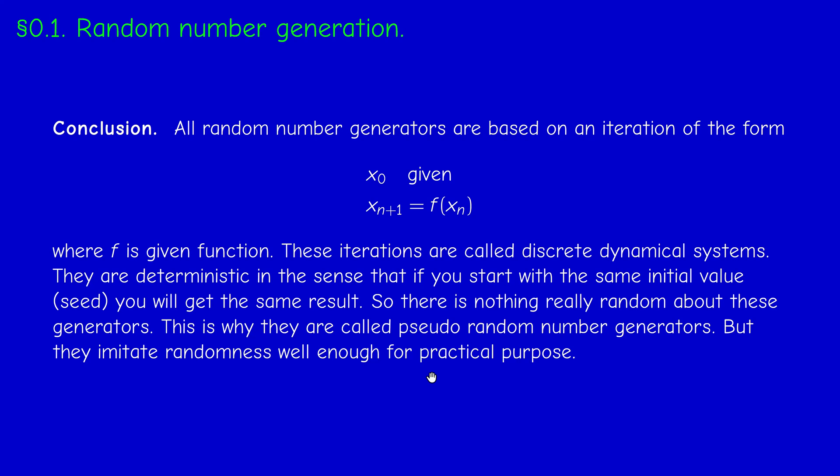This is why, to be precise, these are called pseudo-random numbers — they are not truly random, but they imitate randomness. For any practical purpose that will be enough. There is a deeper question: does true randomness really exist? What we don't understand or cannot control we call random. In this deterministic framework, if you start with the same value you get the same result.